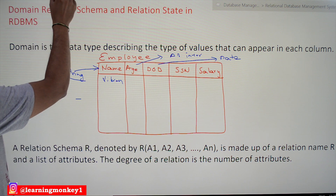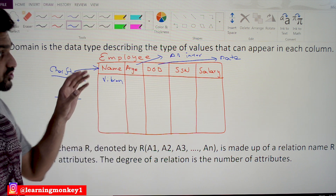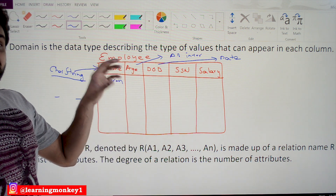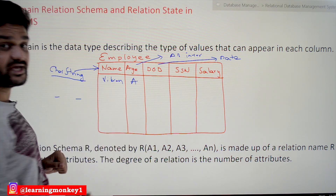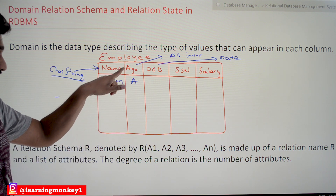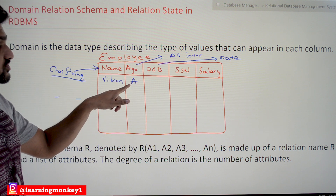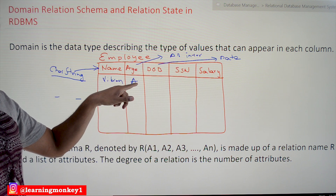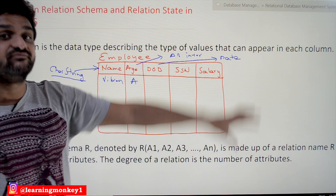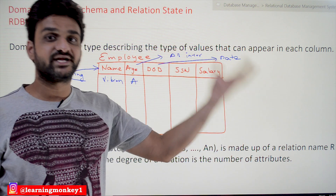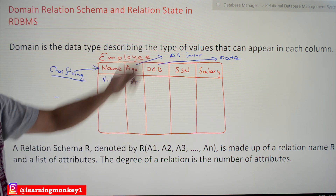For any attribute in a relation schema, we have to declare its domain. For example, if we try to insert a character into an age field, that should not be allowed, because we have stated it as an integer and we are trying to insert characters — that should not be permitted. That is why we have to specify the data types of each and every attribute. Just remember: domain is the data type describing the type of values that appear in each column.